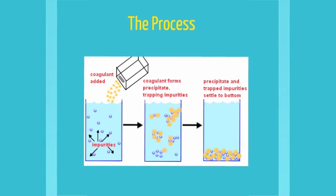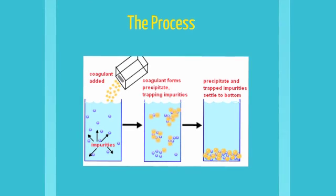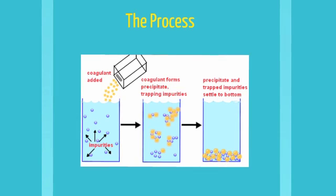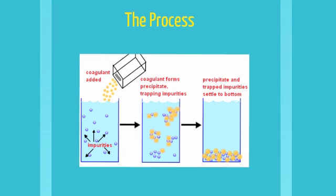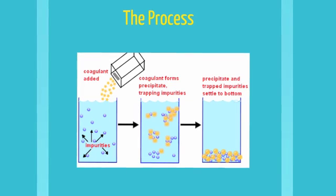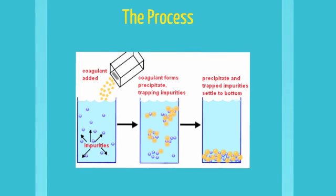Here is how the process of coagulation and flocculation works. First, the coagulant is added — remember, this is usually alum. After the coagulant is mixed with turbid water, the suspended particles come together to form larger particles called flocs. These flocs then settle down to the bottom, which leaves the water clear.